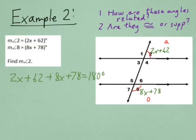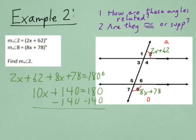Then, all I gotta do is solve it. Combining like terms, I would get 10x plus 140 equals 180. Subtracting 140 from both sides, I would be left with 10x equals 40. And from there, we can see that x equals 4.